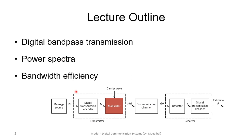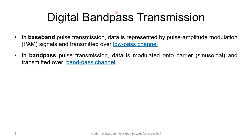If you look at the communication model, you'll find out that what is new here, comparing band pass with baseband, is the fact that we have modulation. So we have message source, then signal transmission encoder, and then we modulate the signal — that is to say, we're going to have a carrier. And with the receiver, we have to do the demodulation process.